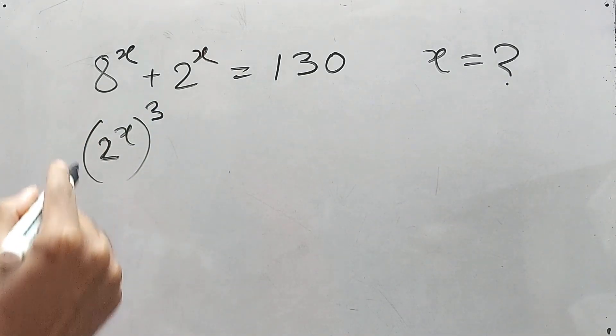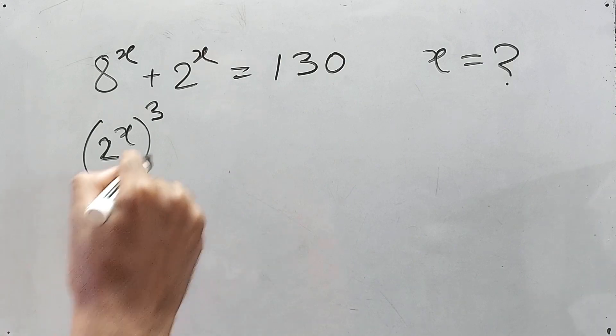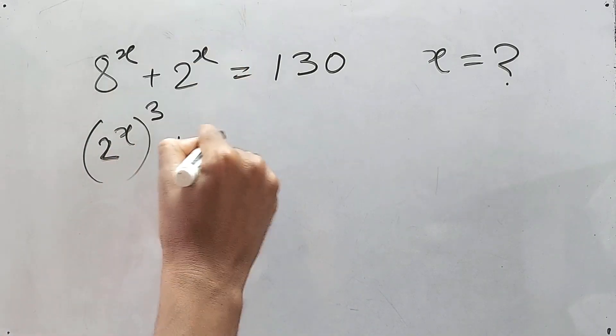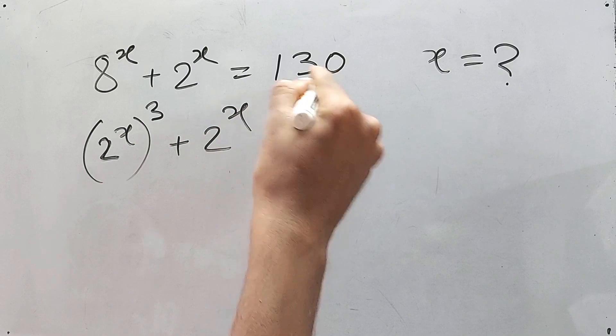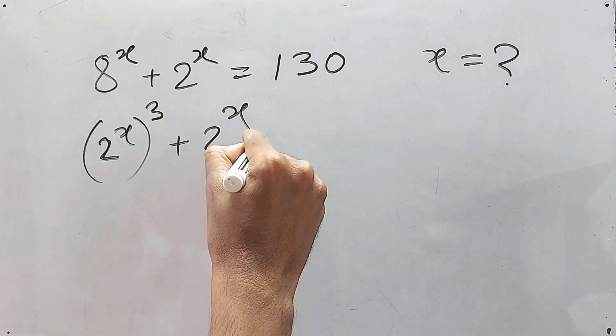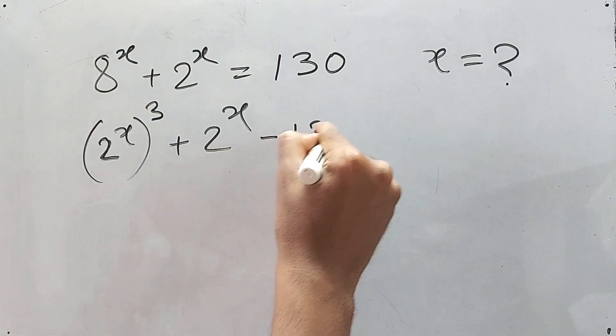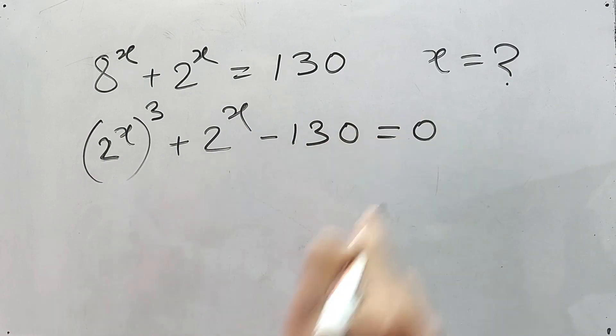Is it clear? Yeah, definitely. We know this, and this one 2 to the power x. Take this one also left side, so it will be minus 130 is equal to zero. Clear up to this? Easy, right.